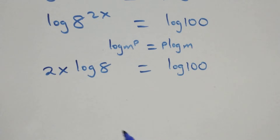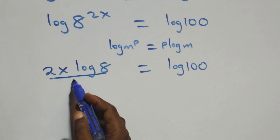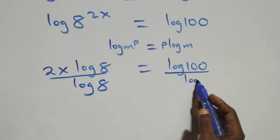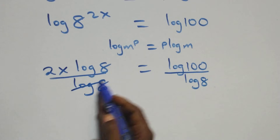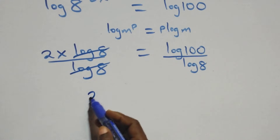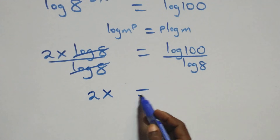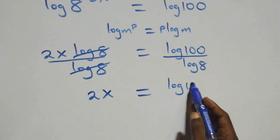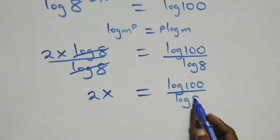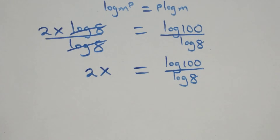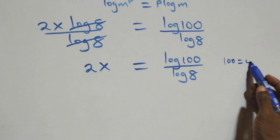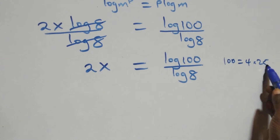Next, divide both sides by log 8. Dividing this side by log 8 and also dividing the other side by log 8, we get 2x equals log 100 over log 8.